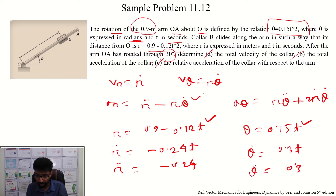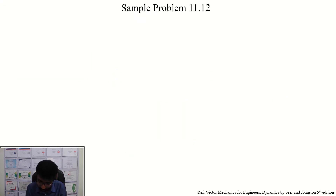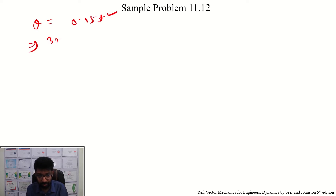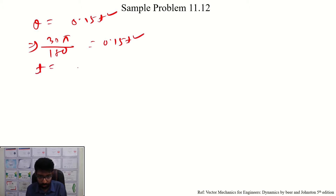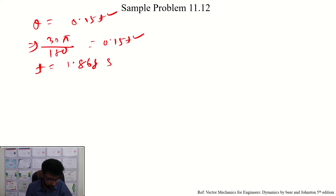We compare at the time when theta equals 30 degrees, which equals pi over 6 radians. Setting 0.15t squared equal to pi over 6, we solve to get t approximately equals 1.868 seconds. We have now calculated the required time value.